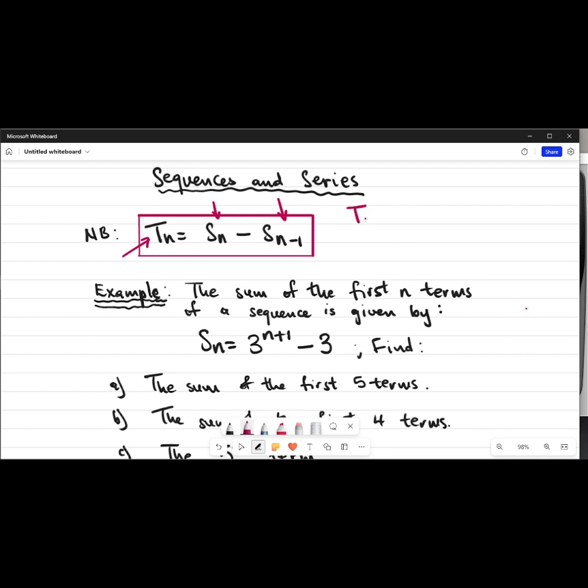Minus the sum of the previous one. Now what do I mean by that? As you can see, the value of n, you're just going to see 10 minus 1. Since in our case we're looking for 10, this would give you the sum of the first 10 terms minus the sum of the first 9 terms.